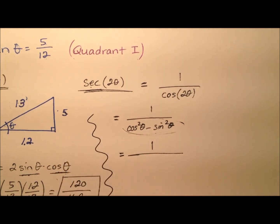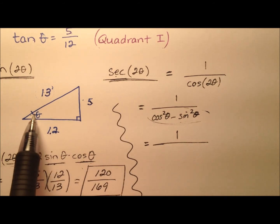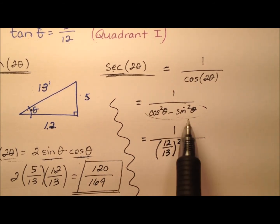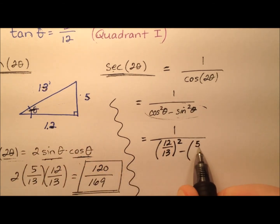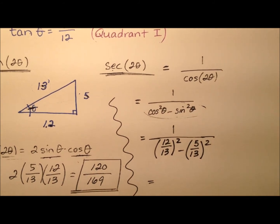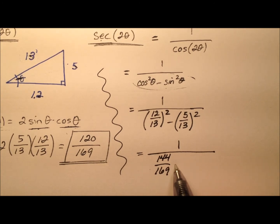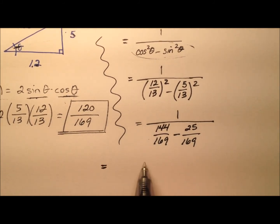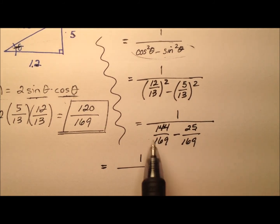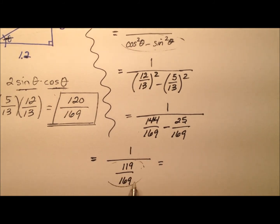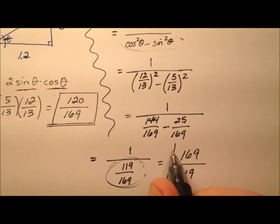So we have 1 over cosine squared theta minus sine squared theta. Our cosine again was adjacent over hypotenuse, so it will be 12 thirteenths squared, minus sine of theta which was opposite over hypotenuse, so 5 over 13 squared. When I compute this, I'll have 1 over 144 over 169 minus 25 over 169. So I have 1 over 119 over 169, since 144 minus 25 is 119. We have 1 over a fraction, which is just the reciprocal, so I get 169 over 119.